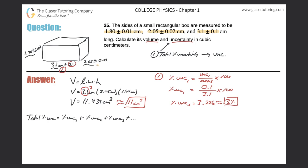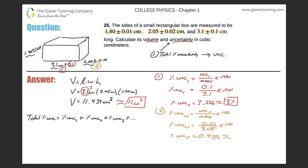Now let's look at the width. The percent uncertainty of the width equals the uncertainty of the width divided by the measurement itself, times 100. That's 0.02 divided by 2.05 times 100, which comes out to 0.9756. Rounded to one significant figure, that's 1%.